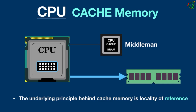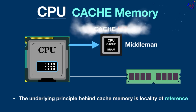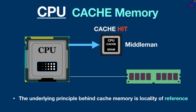As a result, it greatly enhances the overall speed and performance of the computer system. When the CPU needs to access data, it initially checks the cache memory. If the requested data is present in the cache, it is referred to as a cache hit. Consequently, the CPU can swiftly access data from the cache, bypassing the slower main memory RAM.